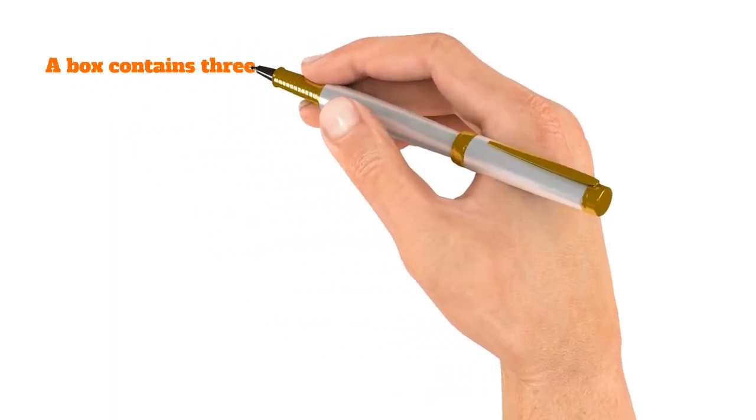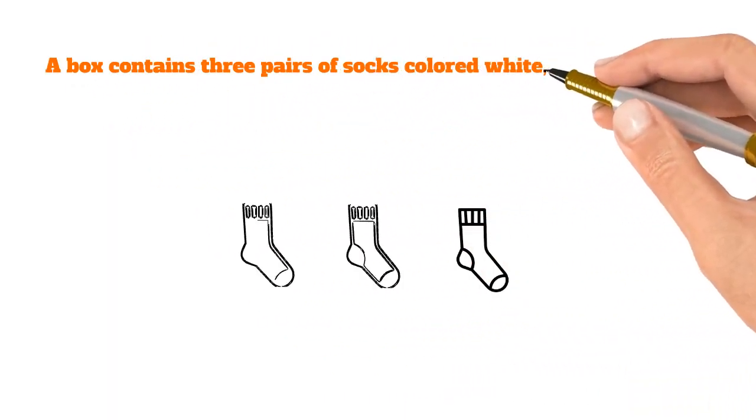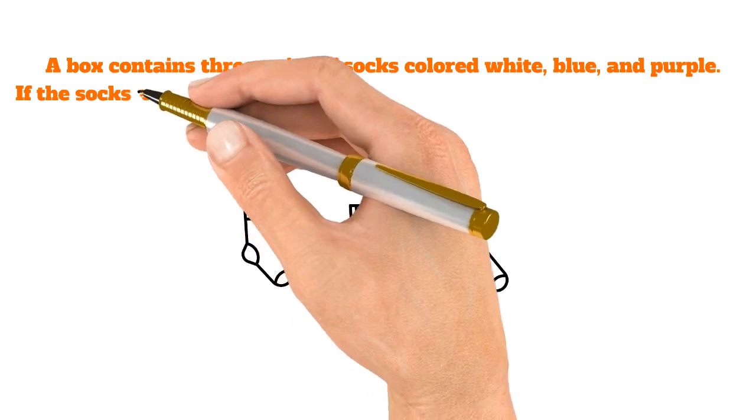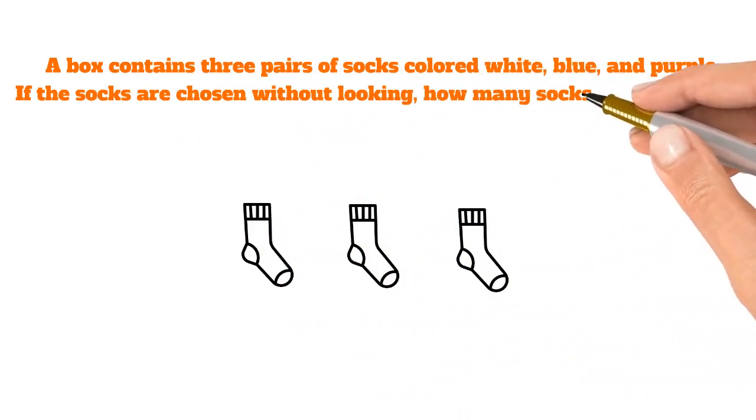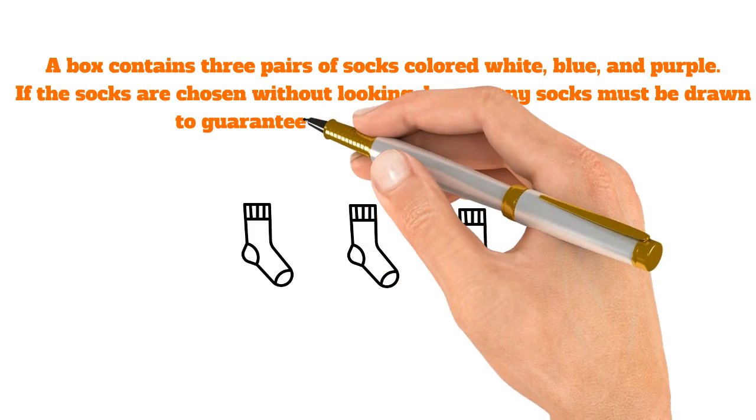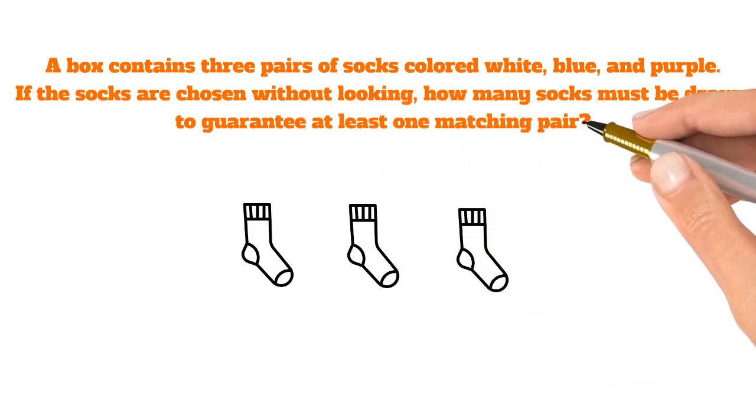A box contains three pairs of socks colored white, blue, and purple. If the socks are chosen without looking, how many socks must be drawn to guarantee at least one matching pair?